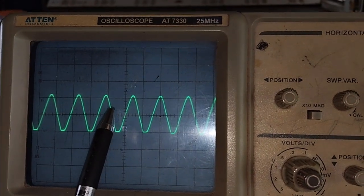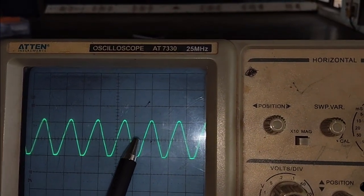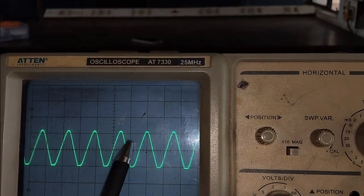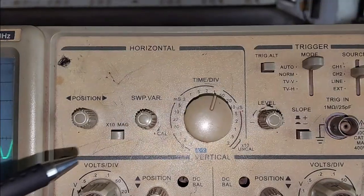Let's measure it from this point, it is 1 and 1.6 division. 1.6 division is multiplied with time per division that is 0.1 millisecond.